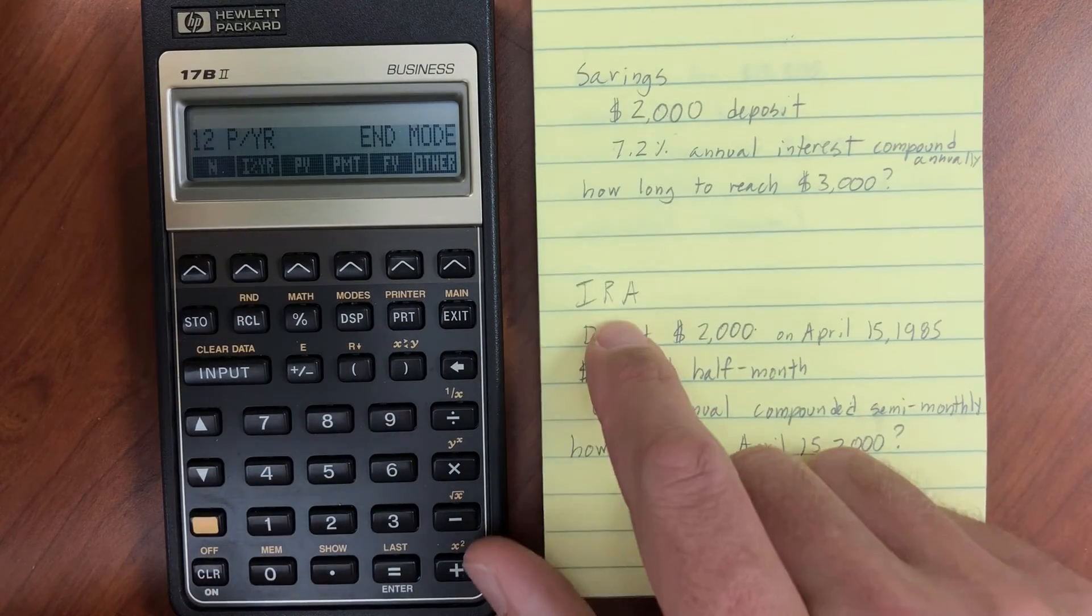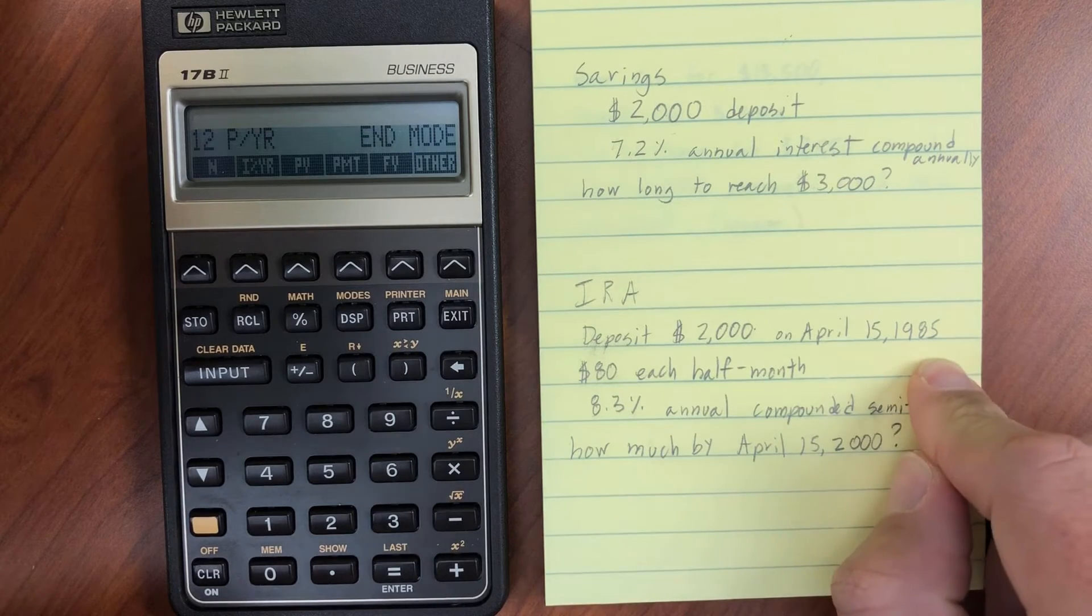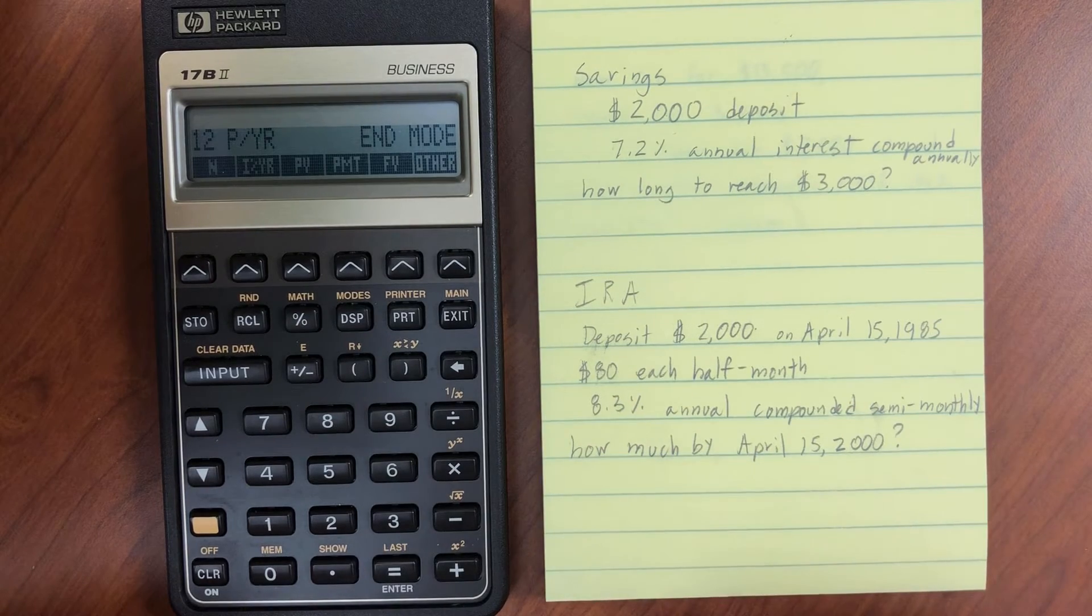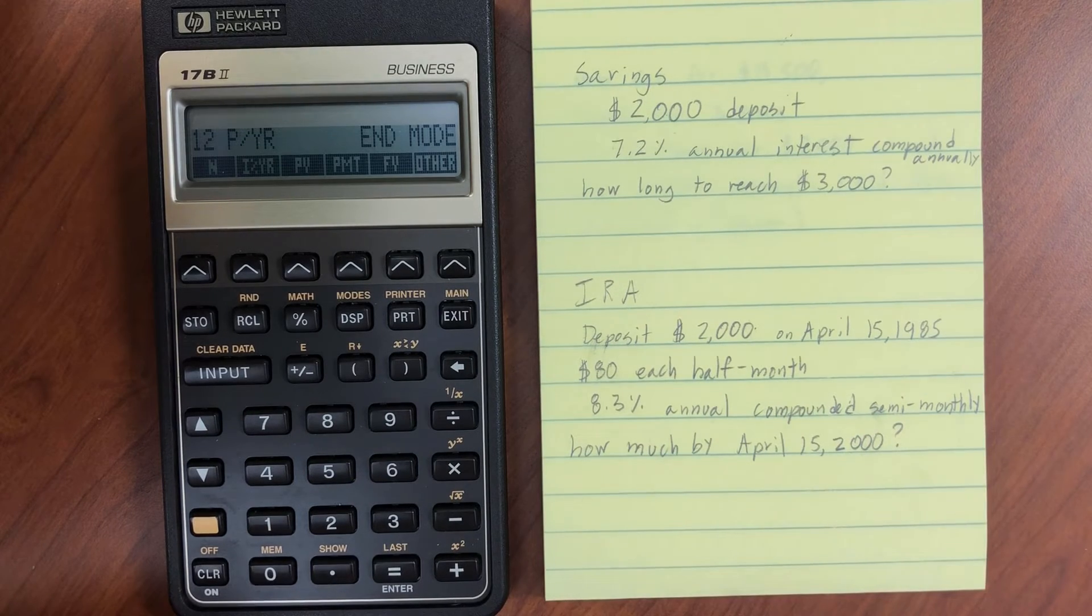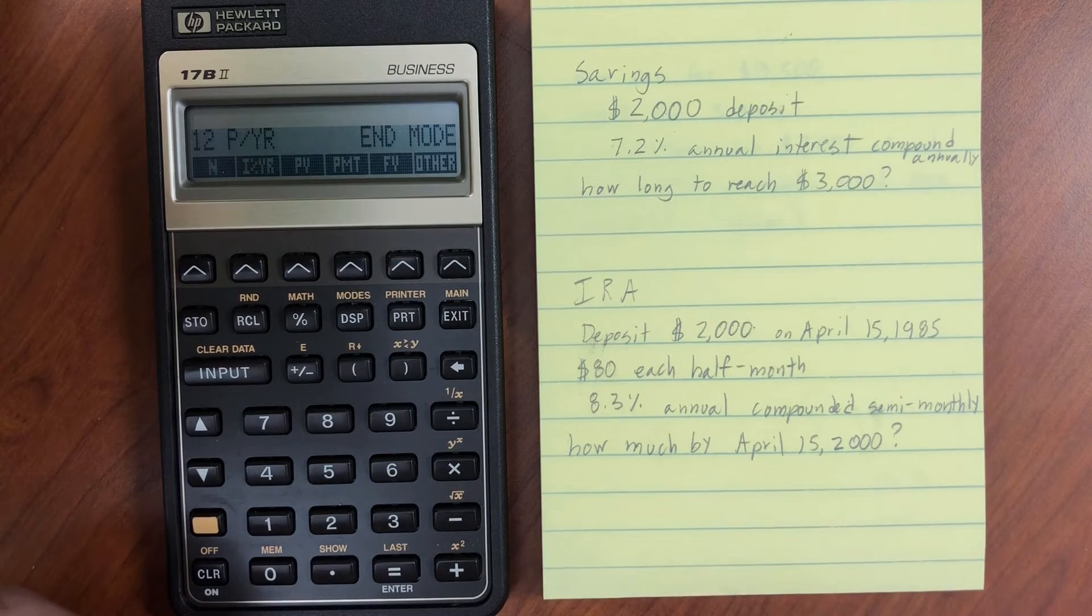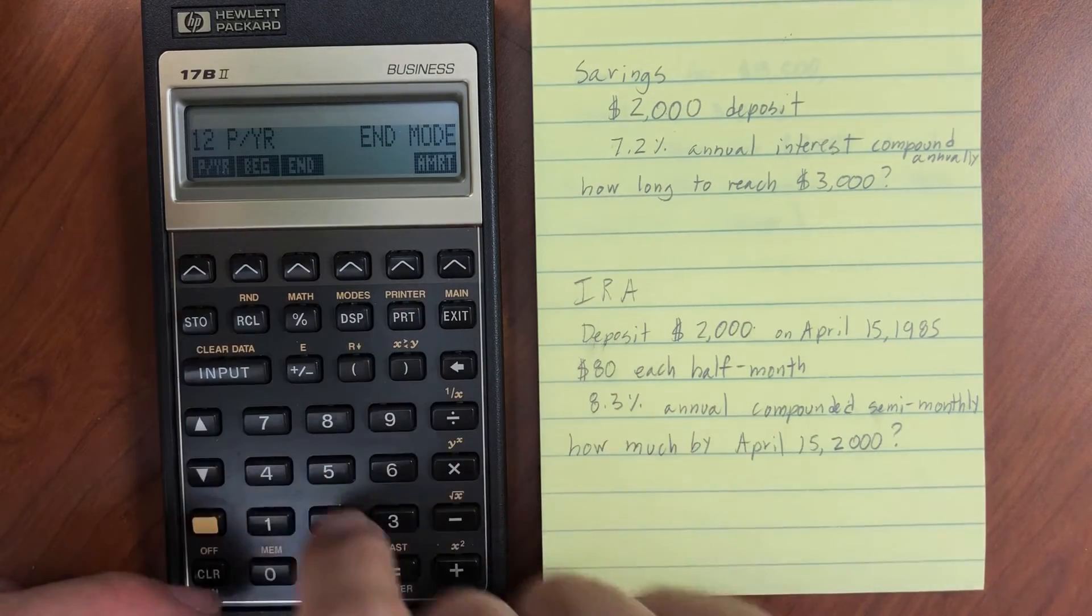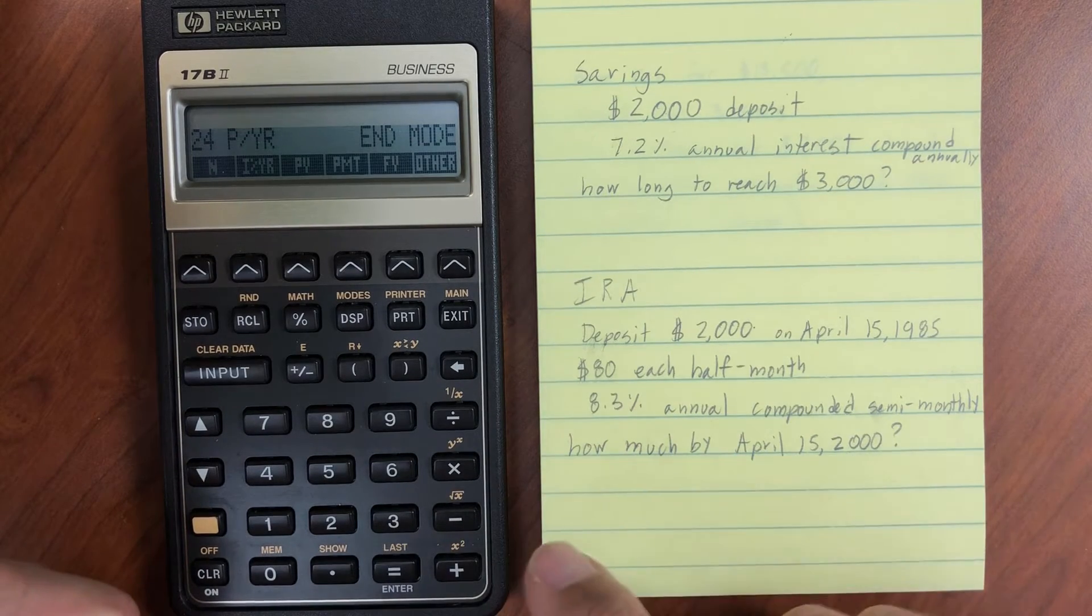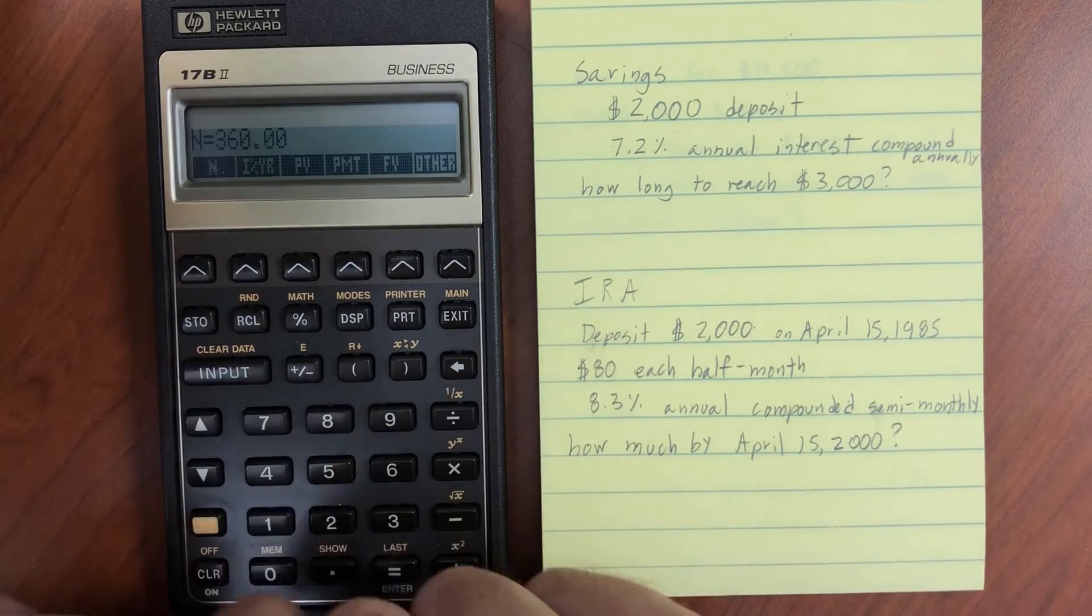For this next example, we're going to have an IRA deposit $2,000 on April 15, 1985. That's probably around when this manual was produced, this calculator. $80 every half month. So we're probably on a bi-monthly payment plan or salary. 8.3% annual interest compounded semi-monthly. And how much will we have by April 15, 2000? So 15 years later. 15 years of doing this. So first I want to set my payment period to be 24 payments per year. I have bi-monthly. We've got 15 years to go. And if I do the shift N, that gives me the number of periods.